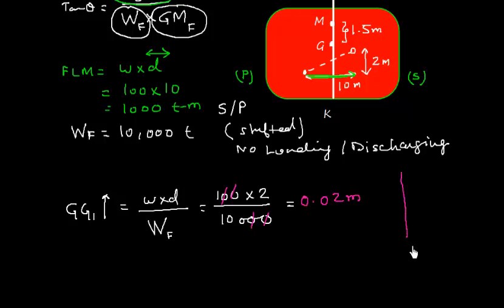Now, if we look at this, K is here, G is here, and M is here. Since there is a shift in upward direction, the G will also shift upward. So, G, G1.